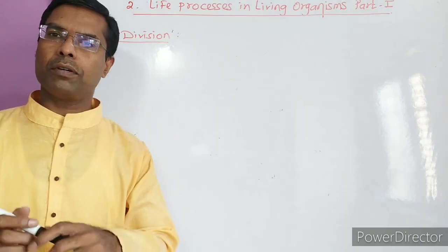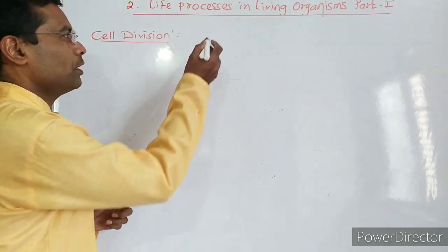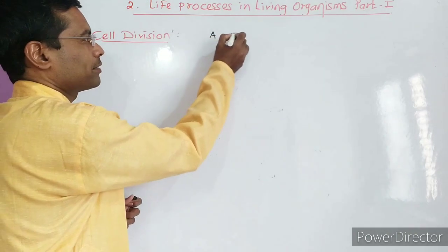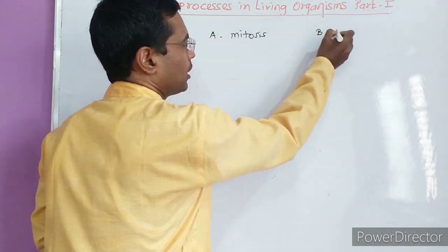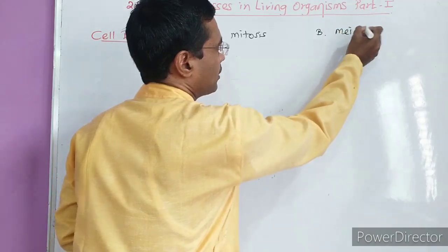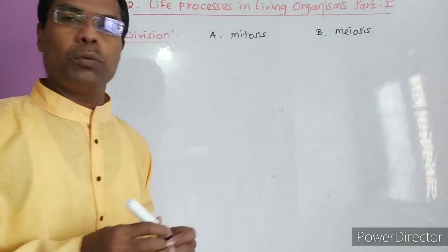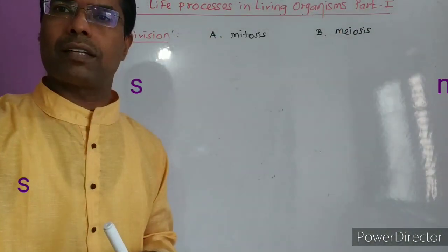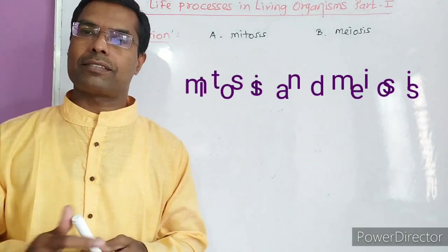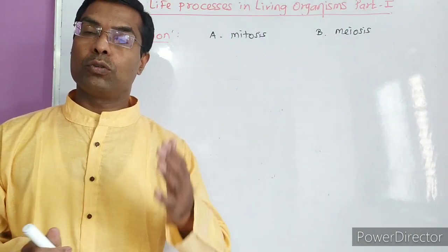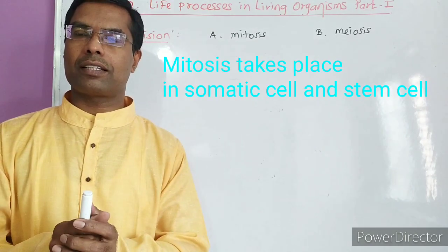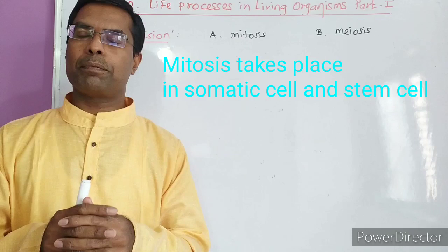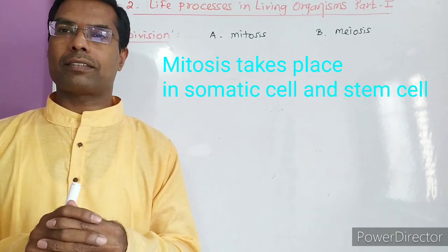There are two types of cell division. One is called mitosis and another type is called meiosis. Mitosis actually takes place in the somatic cells and stem cells. Somatic cell means body cell.